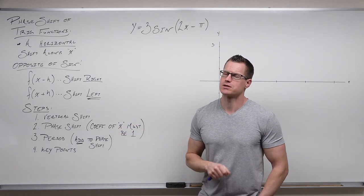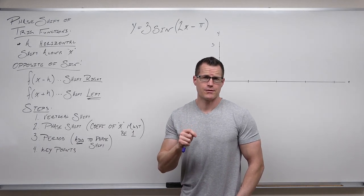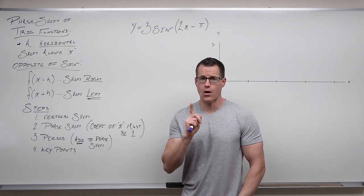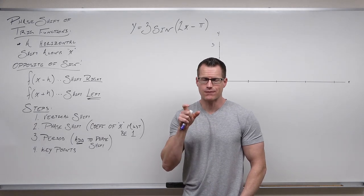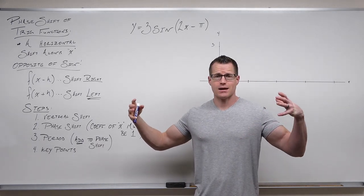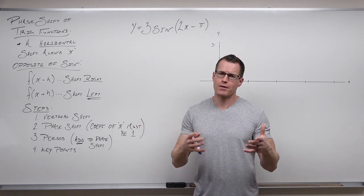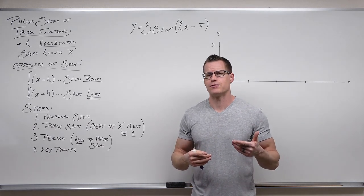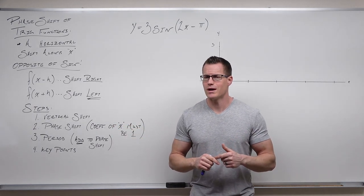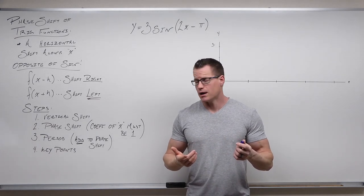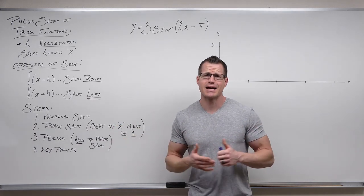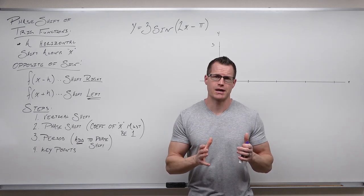The second key rule: to identify a phase shift, the coefficient of your x must be 1. So almost always, we're going to divide first — forcing that form. Here are the steps: first, look for a vertical shift; second, identify the phase shift by making the coefficient of x equal to 1; third, find the period; and lastly, use key points to graph.